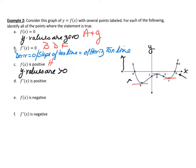f'(x) is positive means the derivative is greater than zero, which means the slope of the tangent line is positive, which also means we're looking for where the function is increasing. The tangent line slopes are positive in certain sections, so we pull out points c and h — the function is increasing at those labeled points.